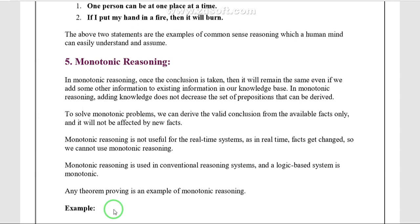The disadvantage of monotonic reasoning is that it is not effective for real-time systems. Real-time systems have facts that change day by day, minute by minute, or hour by hour. When the real-time system is changing, we cannot derive a perfect conclusion. That is why monotonic reasoning is not applicable for real-time systems.